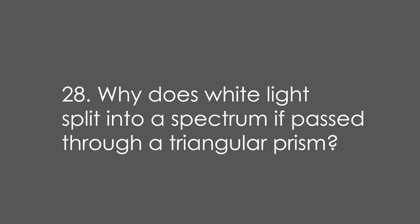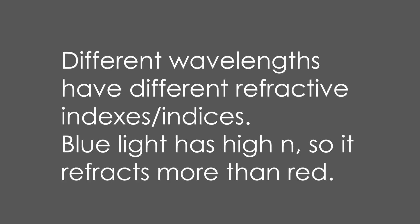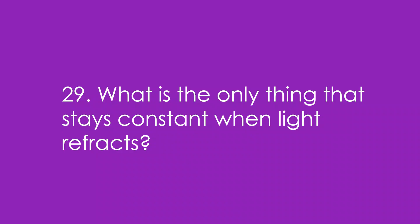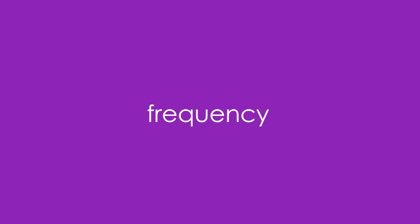28. Why does white light split into a spectrum if passed through a triangular prism? It's because different wavelengths have different refractive indices. Blue light has a high refractive index so it refracts more than red. 29. What is the only thing that stays constant when light refracts? It's the frequency.